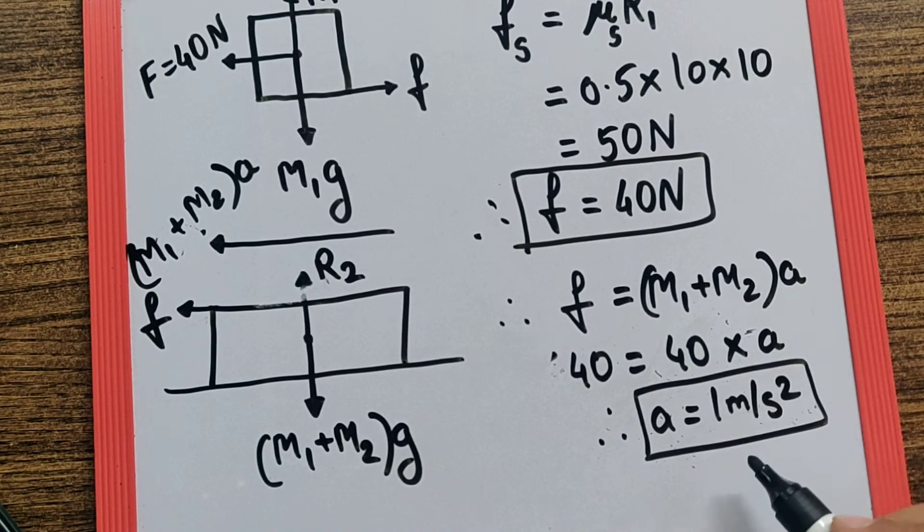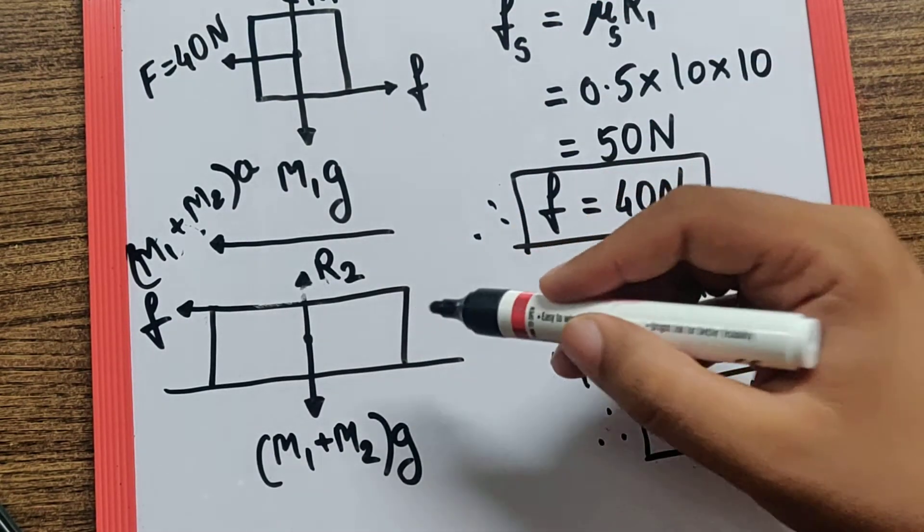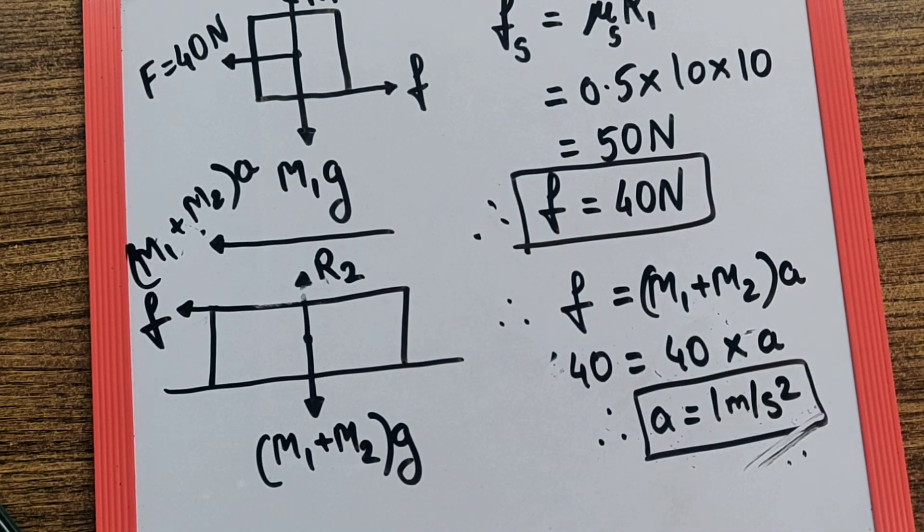So here in this case, the final answer would be 1 meter per second squared, and both the block and the slab will move with the same acceleration. Thank you.